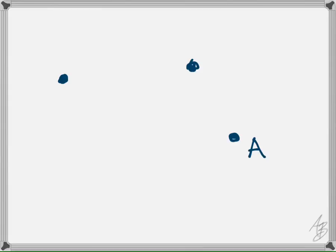Now label them A, B, C. It doesn't matter which one goes where, but depending on how I label them, my picture is going to look different than yours. So I'll go A, B, and C — that's how I'm going to label mine.